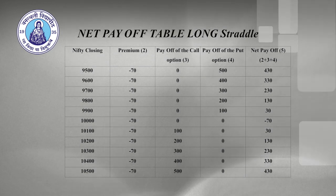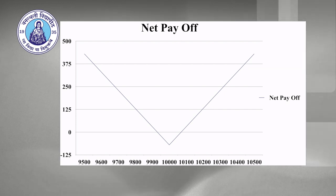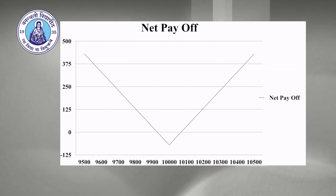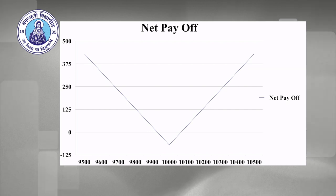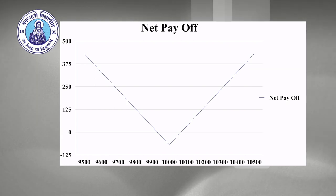The chart prepared shows a V-shape, with Nifty levels on the X-axis and net profit on the Y-axis. The maximum net loss is at the level of 10,000, which is minus 70. Above and below 10,000, the investor gets unlimited profit. It does not matter which direction the market moves — whether it is going up or going down.